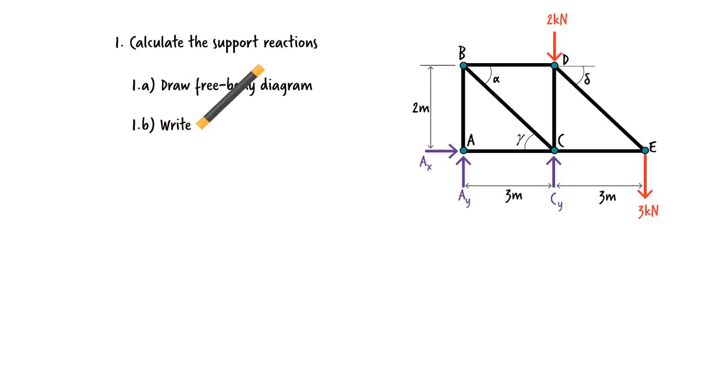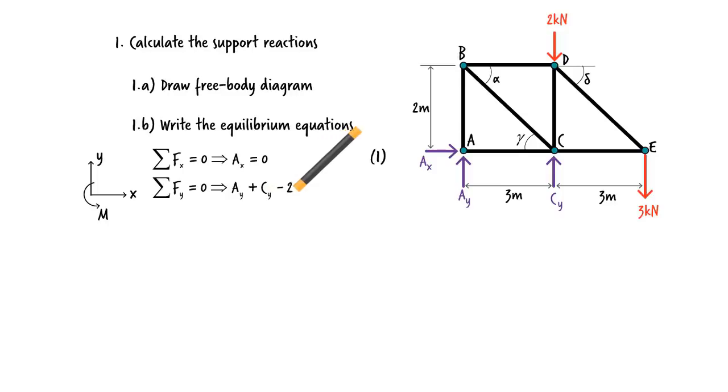We need to write three equilibrium equations. The sum of the forces in the x-direction must be zero. The sum of the forces in the y-direction must be zero. And the sum of the bending moments, say about point A, must be zero.